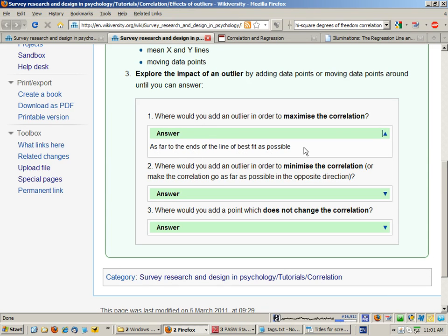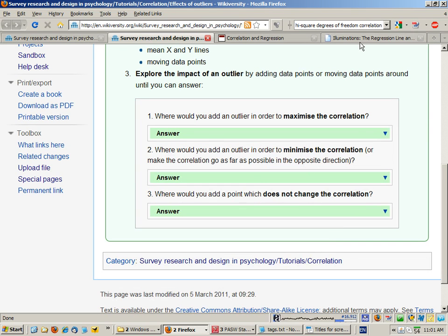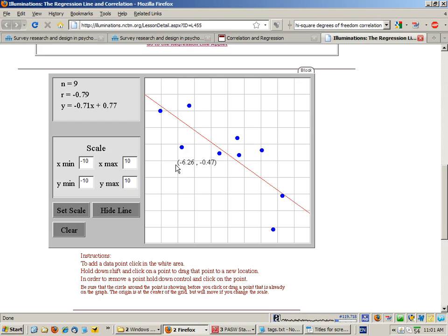Where would we add an outlier in order to minimize the correlation? Well, if you imagine a perpendicular line to the line of best fit and you added data points out on that line, then eventually, as you can see we've already done here, we can change the line of best fit.